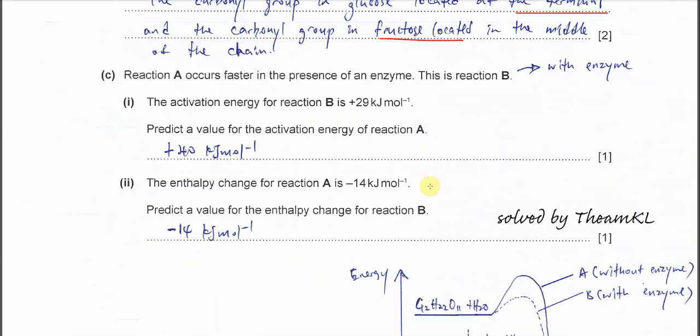Part C: reaction A occurs faster in the presence of enzyme, and this is reaction B. Reaction B is with enzyme, reaction A is without enzyme. Part one: the activation energy for reaction B is +29 kJ/mol. Predict the value of the activation energy of reaction A. Reaction A is without catalyst or enzyme, so it must be higher than this value. You just put any value as long as it's higher than 29.